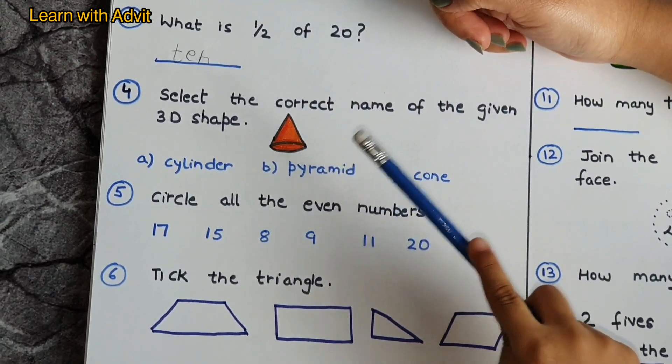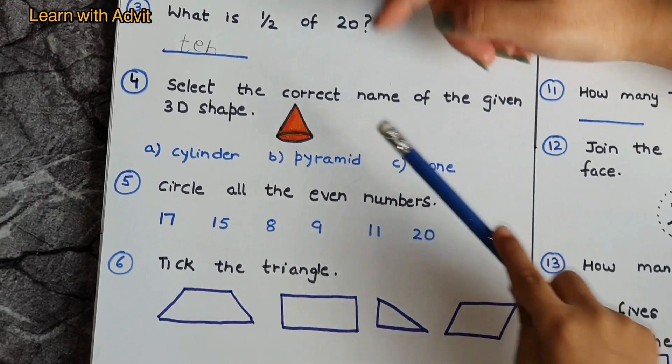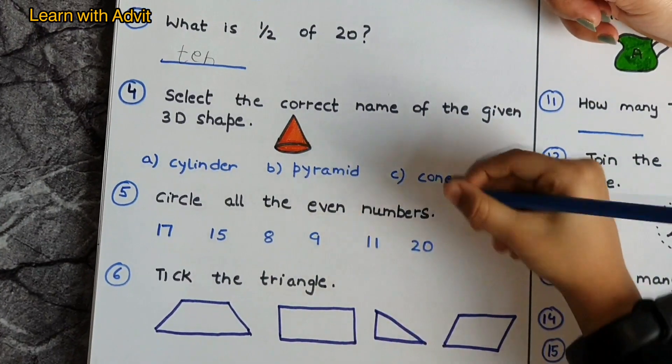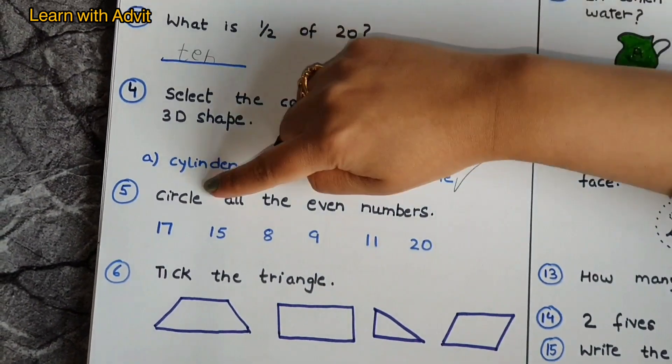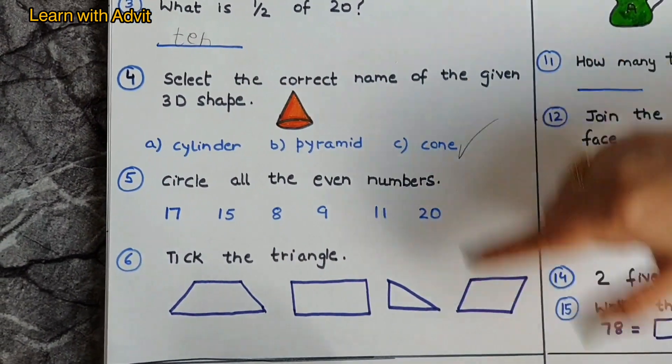Cone, yeah, so take the cone, very good. Circle all the even numbers: eight, eight, eight, and twenty, very good.